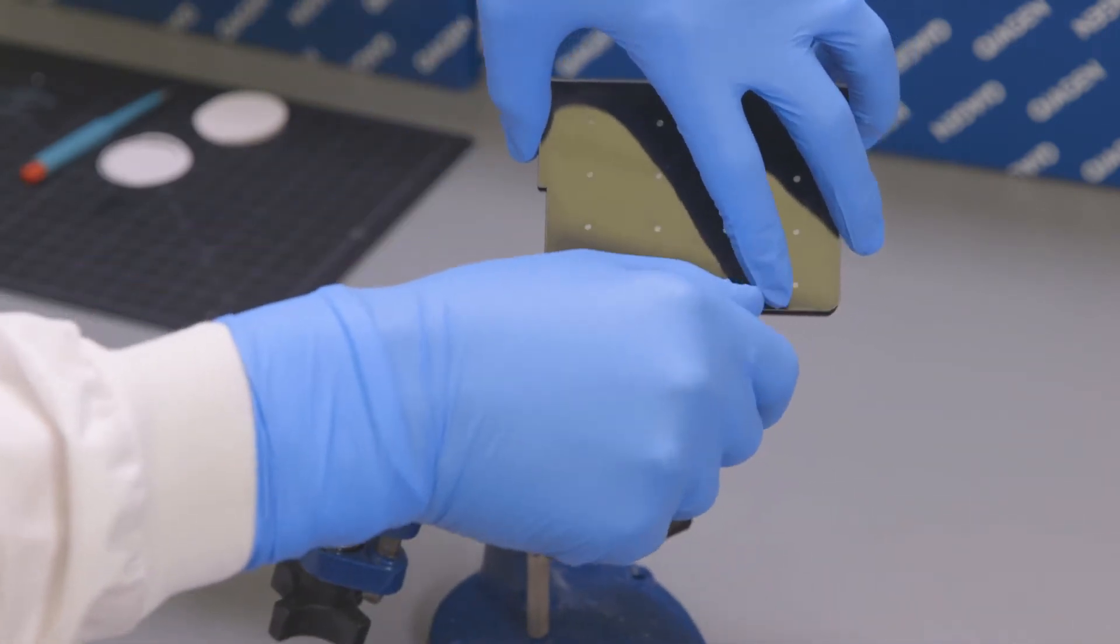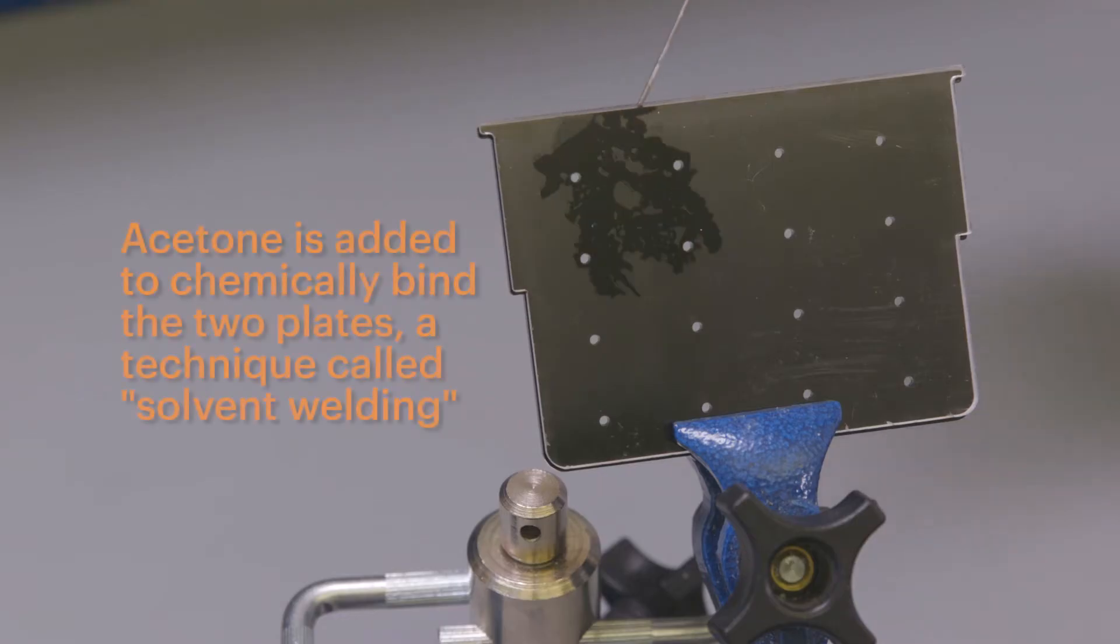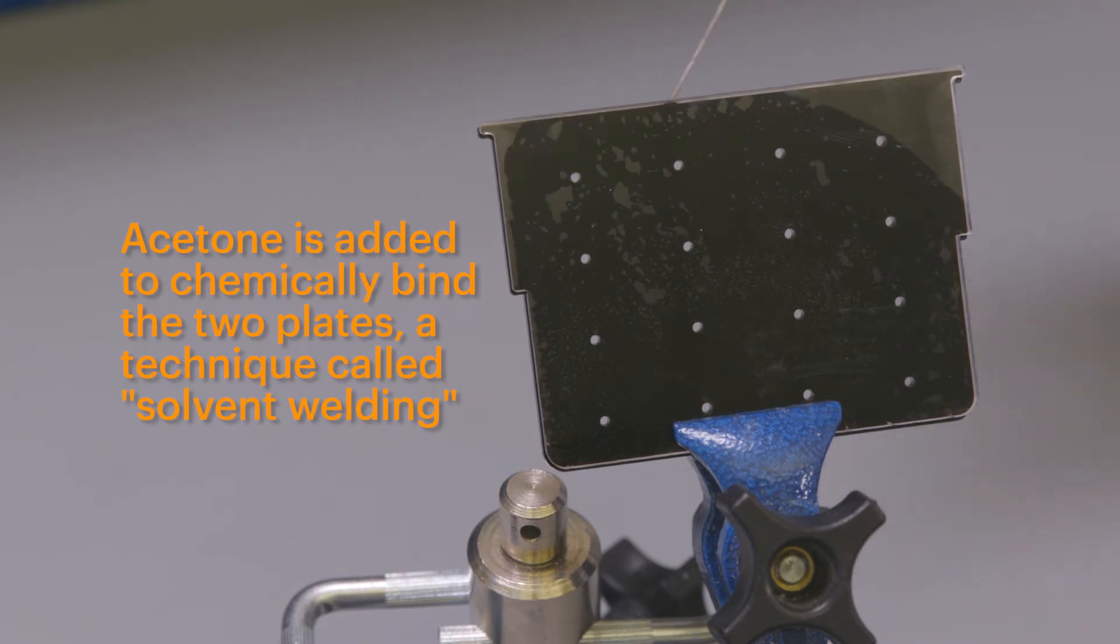The top piece is black to prevent crosstalk between wells. The bottom piece is clear to allow light to shine through each reaction.